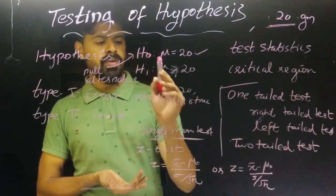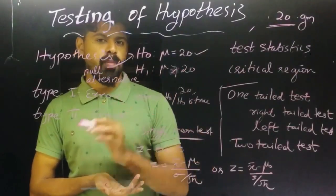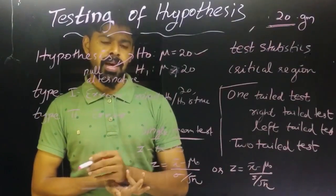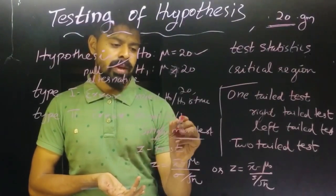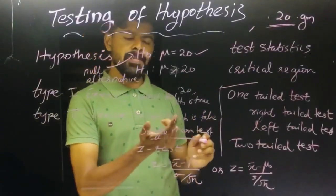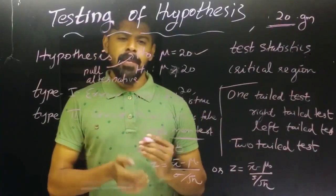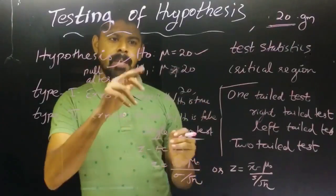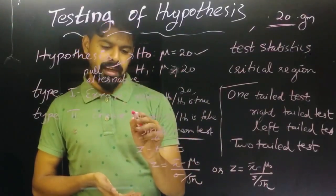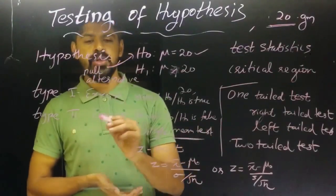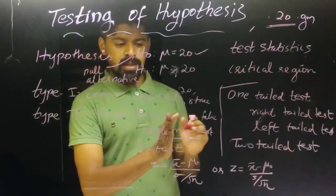Type 2 error is accepting H0 when H0 is false. For example, the biscuit company actually gives less than 20 grams, but we accept H0. Type 1 error means reject H0 when H0 is true. Type 2 error means accept H0 when H0 is false.